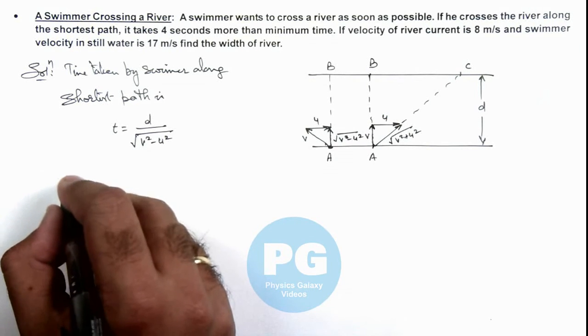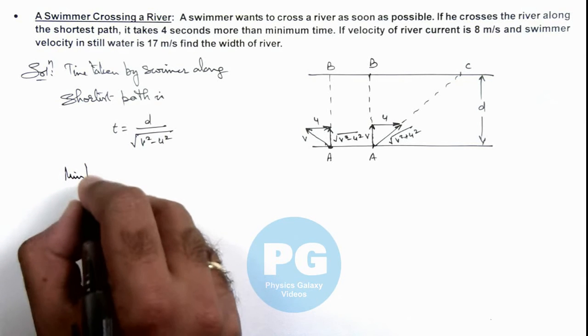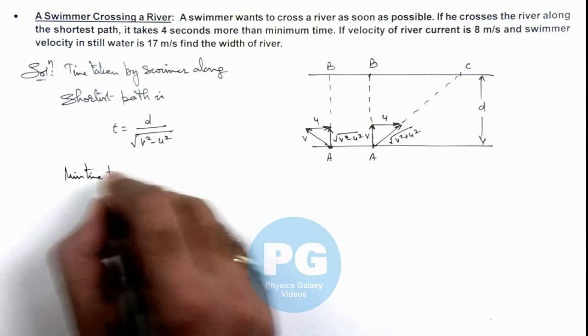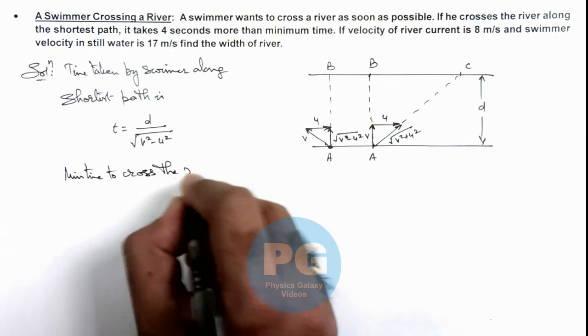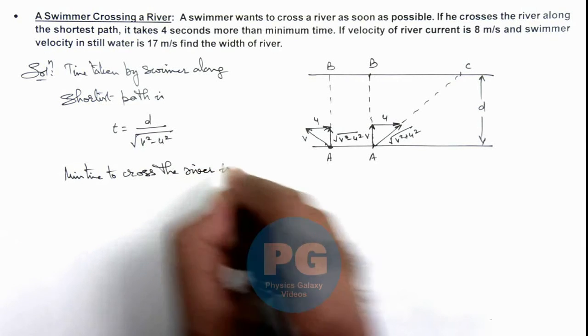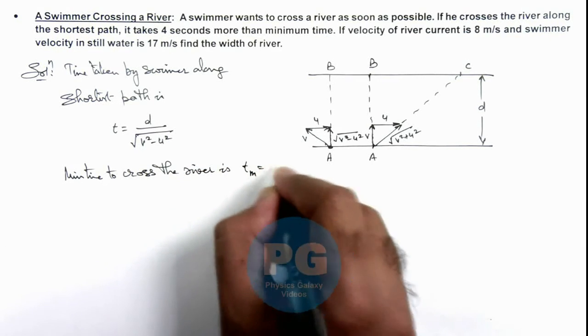So here we can write minimum time to cross the river here is, this Tm we can write as d by v.